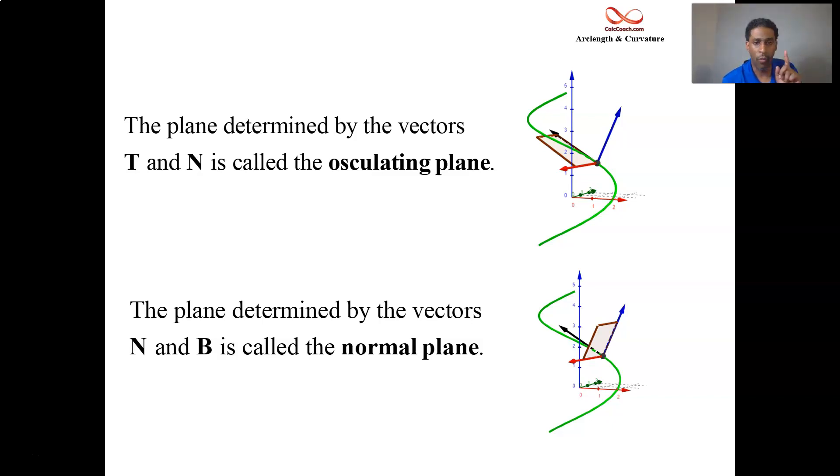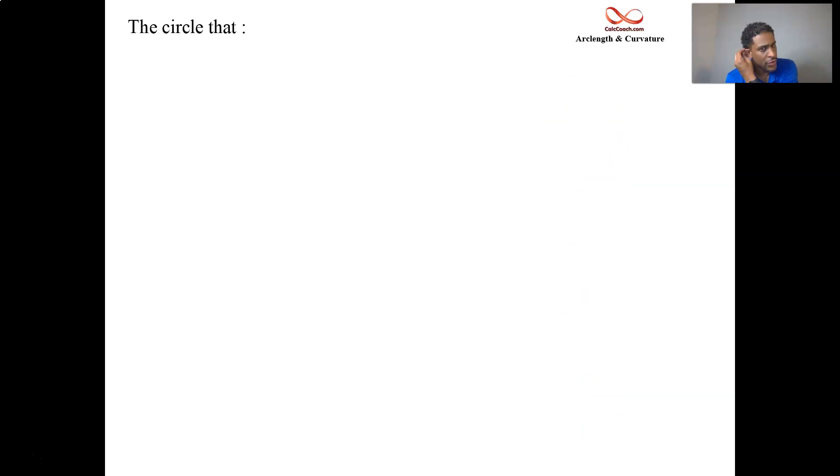And so one more concept. In the oscillating plane, there is a circle that becomes important related to curvature. So the circle, it lies in the oscillating plane. The center of the circle is the point that's on the curve. It'll share the tangent vector. Something that's tangent to the circle will be tangent to the curve at that point.